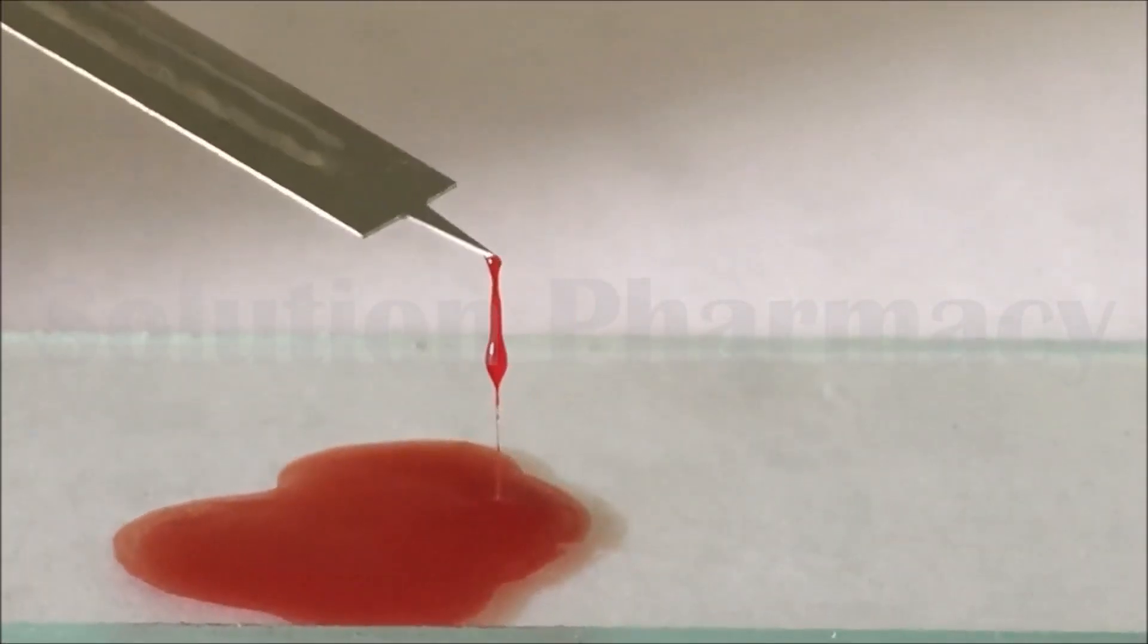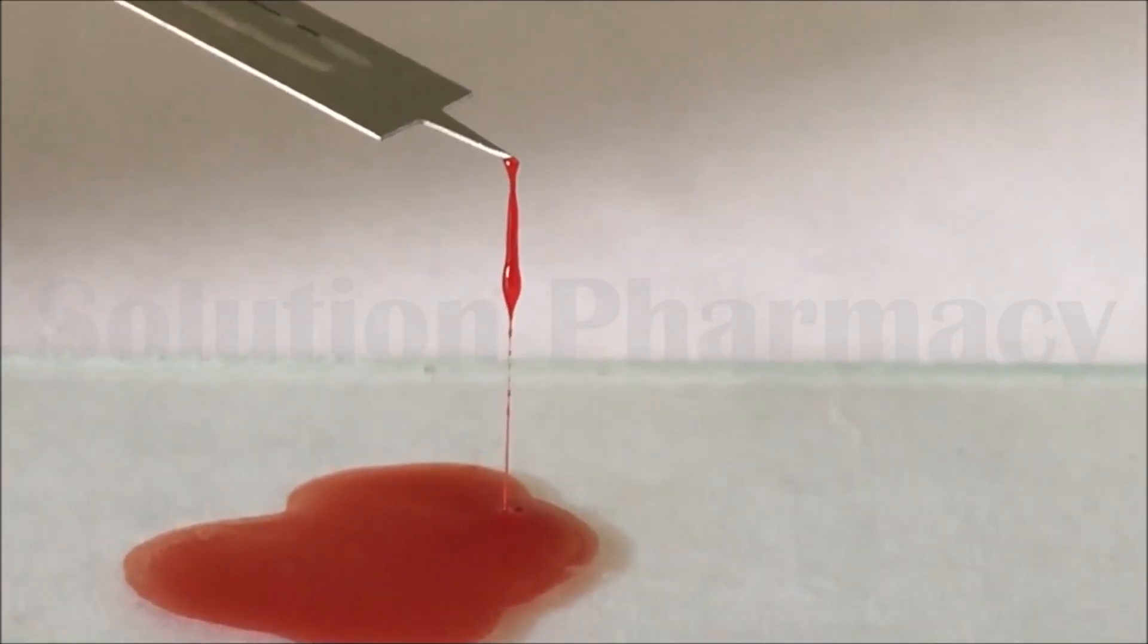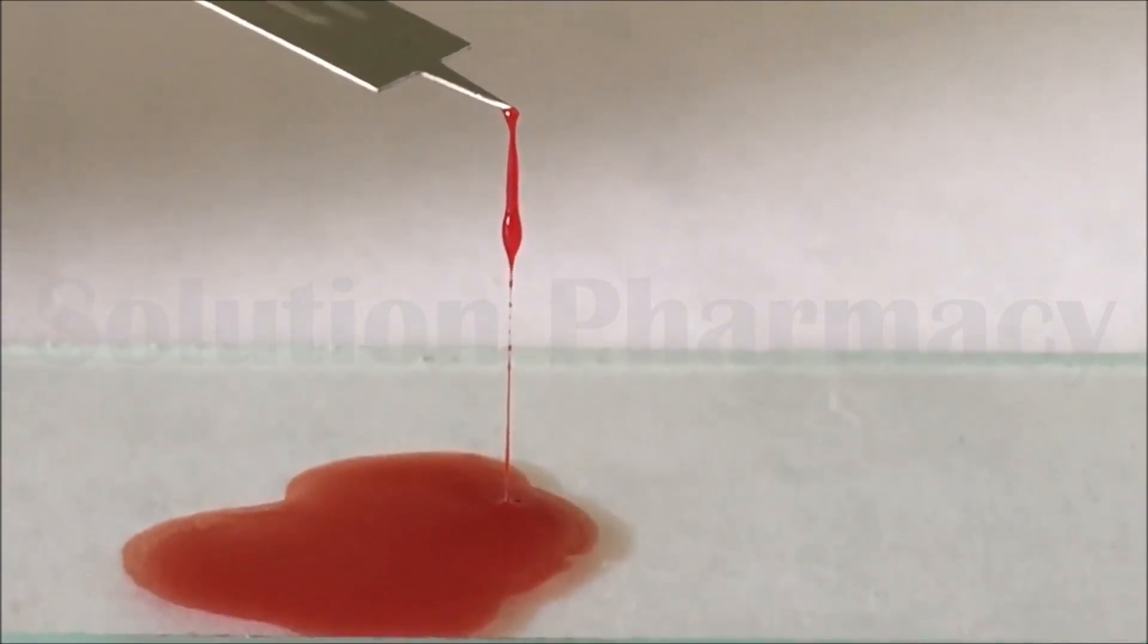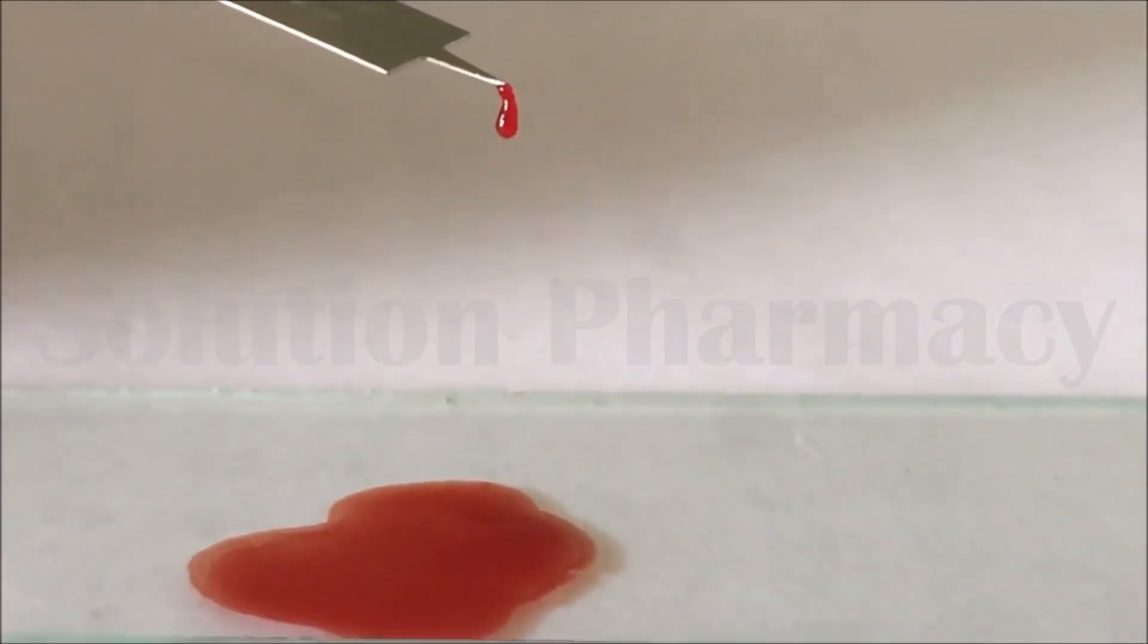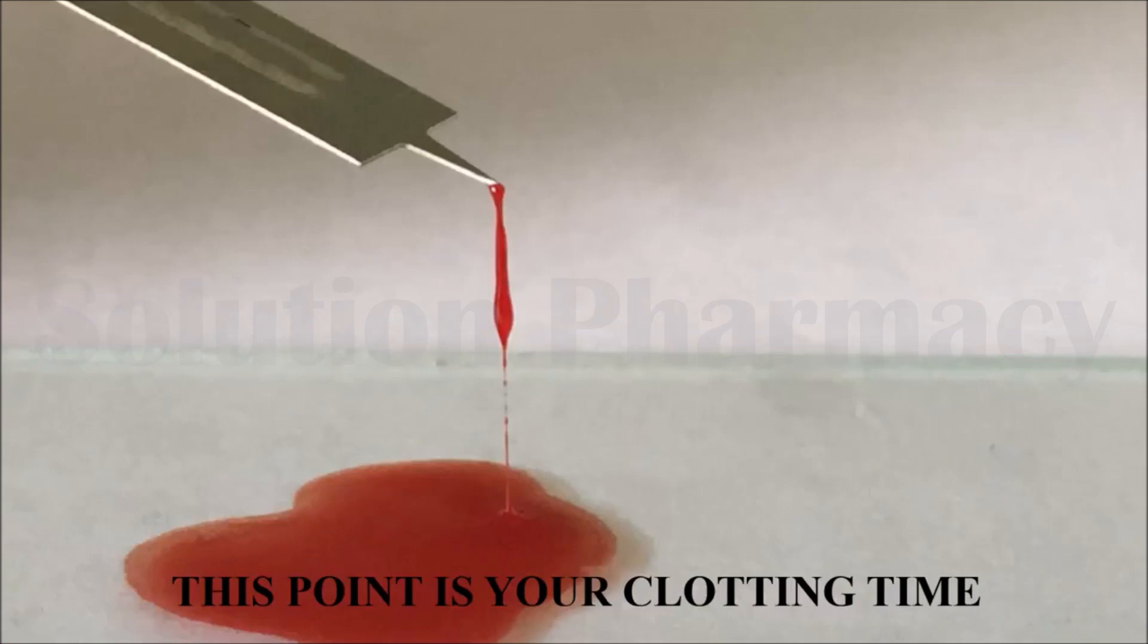Note the time. This time is called the clotting time of our blood sample, determined by the slide method. Clotting time is the time at which clot formation takes place, or the time required for a blood sample to coagulate, which is the time interval between the appearance of blood on the finger to the formation of thin fibrin thread.